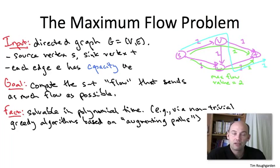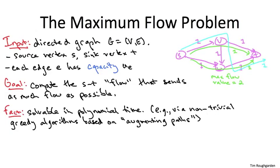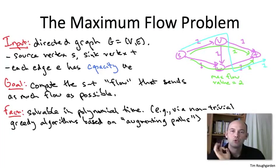So instead, you have to allow a more generous notion of an augmenting path, where you can send flow in reverse, in effect undoing augmentations of previous iterations. But with this more generous definition of augmenting paths, the resulting greedy algorithm is indeed guaranteed to compute a maximum flow. Moreover, if you're smart about which augmenting path you use in each iteration of your greedy algorithm, you can prove a running time bound which is polynomial.